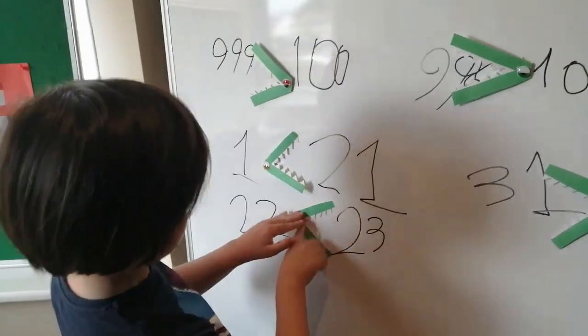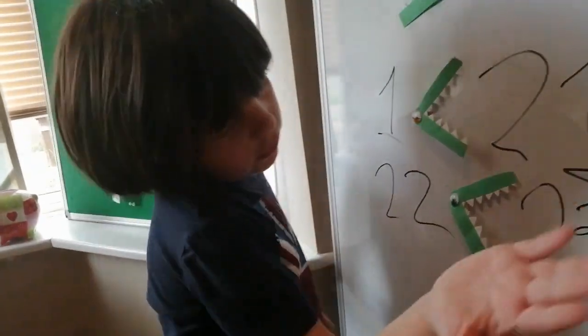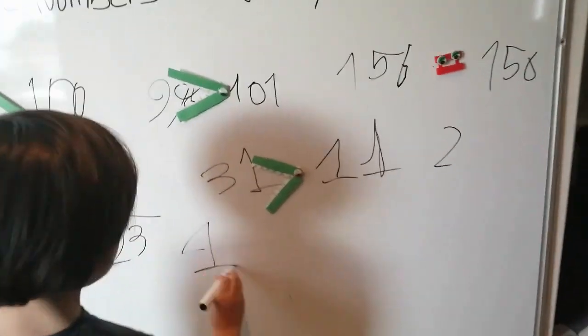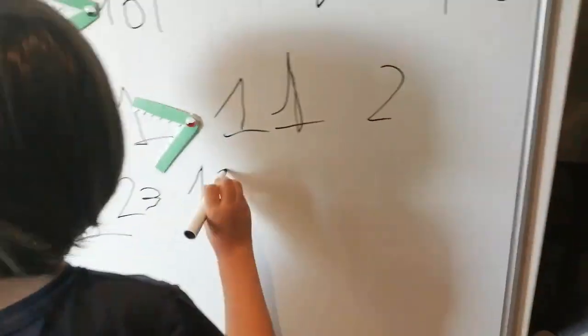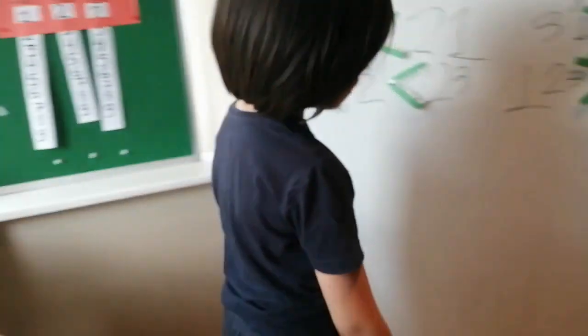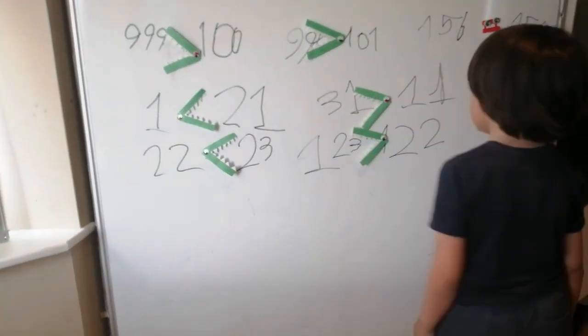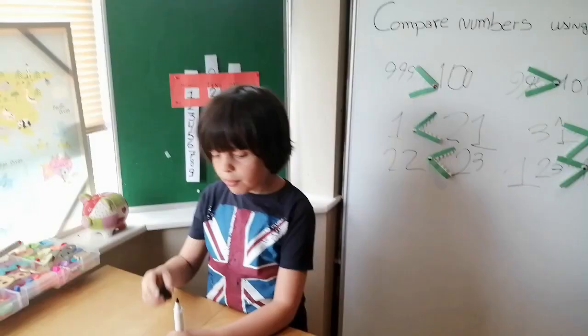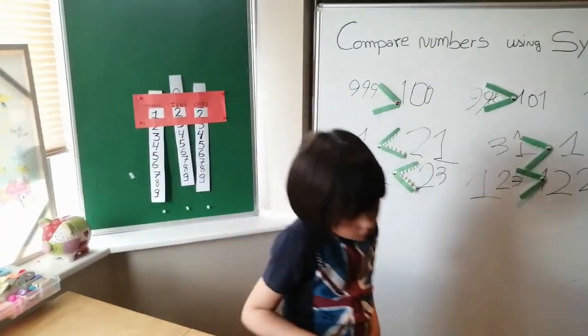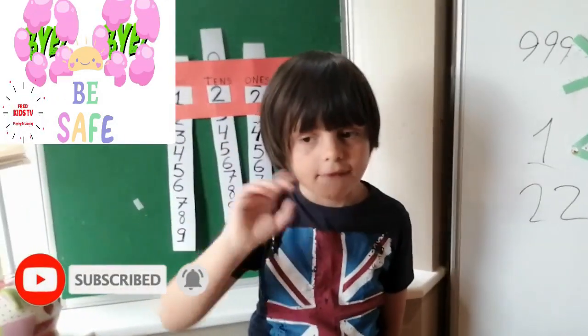Twenty-three. The crocodile is going to eat the twenty-three. The crocodile is eating that. One hundred and twenty-three. Remember guys, the crocodile always eats the bigger number. Bye-bye. Be safe.